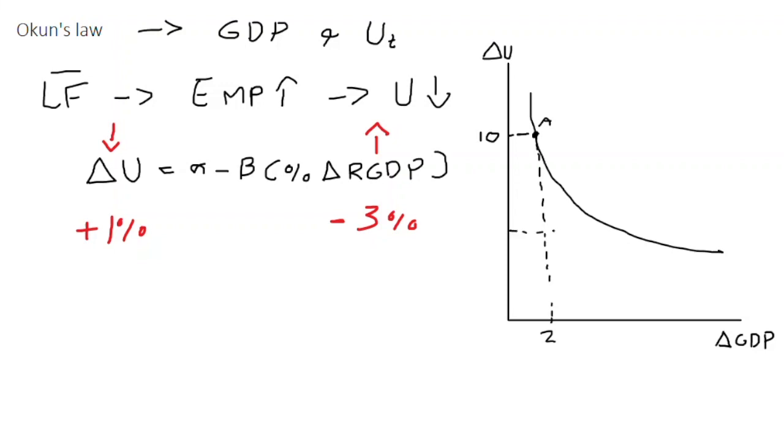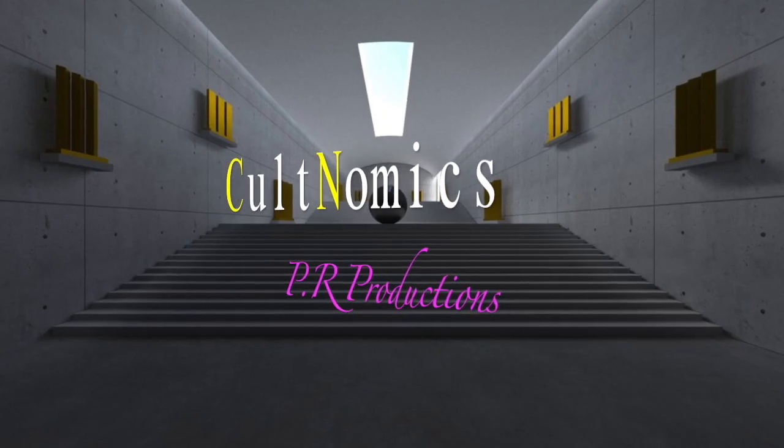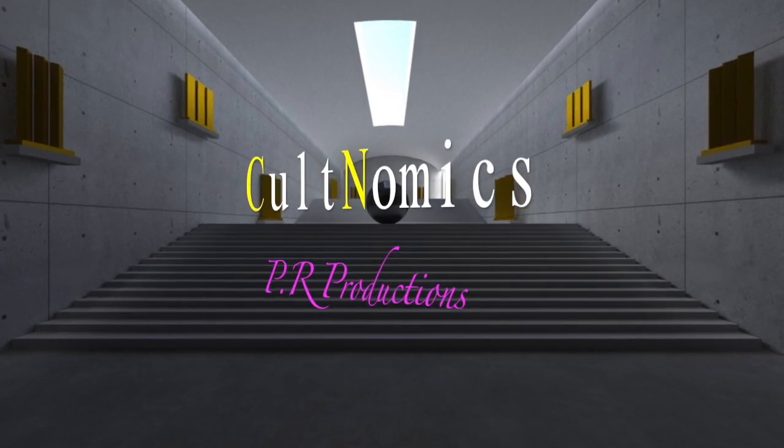Whereas when GDP increases, let's say up to five percent change in GDP, the unemployment rate will reduce down to five in this case. So a negative trade-off between unemployment and GDP. As GDP increases it creates jobs and unemployment drops. I hope you call back to Cultnomics soon. Bye for now.